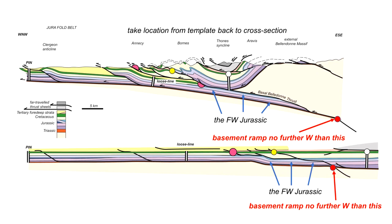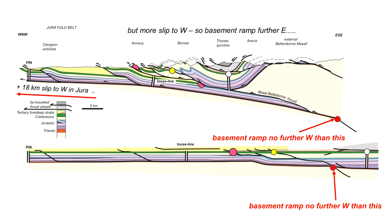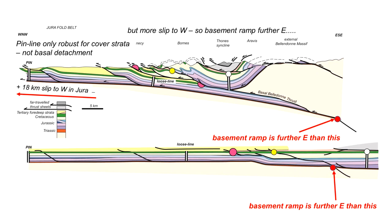In fact, the basement ramp must lie even further away. Remembering the approximately 18 kilometers of further slip to the west in the Jura, our pin line was only robust for the cover strata, so it cannot alone constrain the position of the basement ramp. Thrust displacement runs back along the base of the cover back to our position on the restored template, so the basement ramp must lie perhaps as much as another 18 kilometers further to the east.